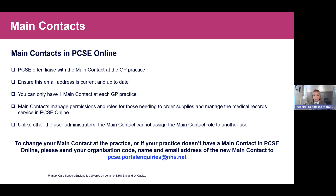If your main contact has left — as in Brenda's case following the restructure — you'll need to contact PCSE to let them know who to set up as the new main contact. You can email the PCSE inquiries team at the address shown on the slide. When emailing in, please include the organisation code, the name, and the email address of who you want the main contact to be.